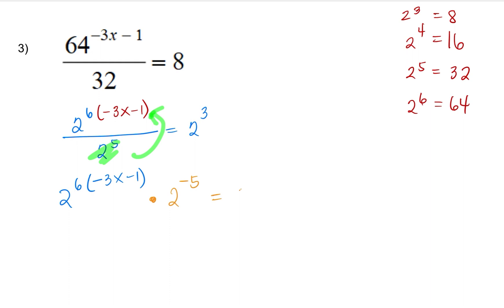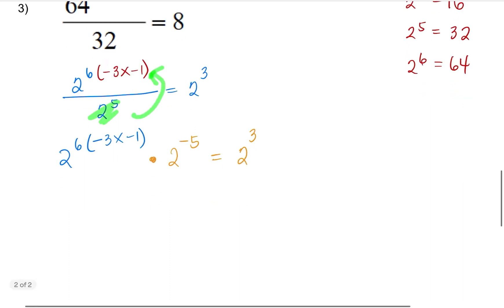Now, the right-hand side, we're just going to drop it down, 2 to the 3rd. And let's simplify. We will have 2 to the... We're going to simplify. So this will be negative 18x minus 6 times 2 to the negative 5th equals 2 to the 3rd.